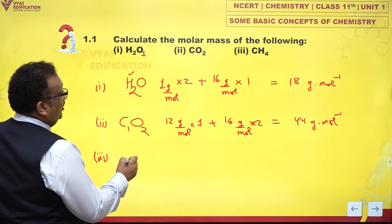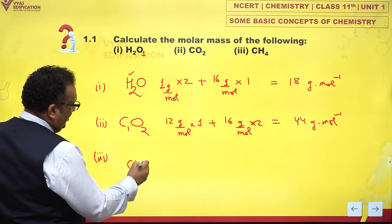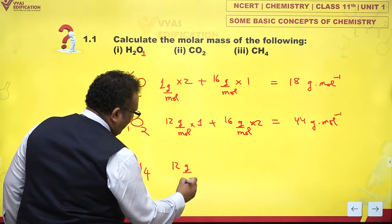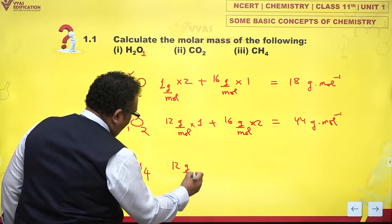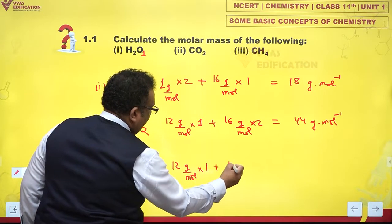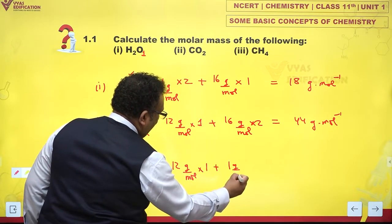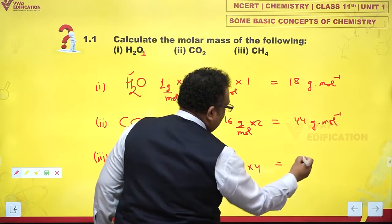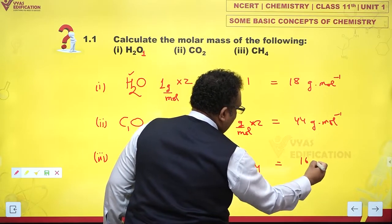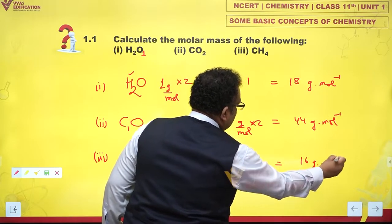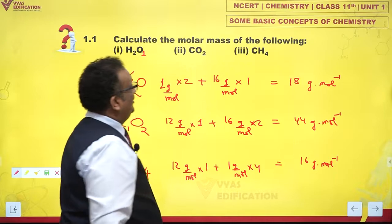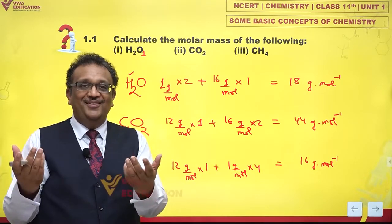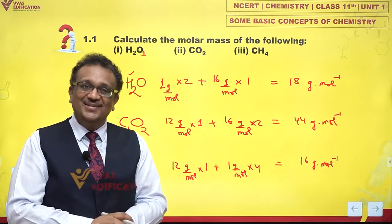What about methane? 12 grams per mole of carbon into 1, plus 1 gram per mole of hydrogen into 4 — that makes it 16 grams per mole. This is the molar mass of methane. Simple, isn't it?